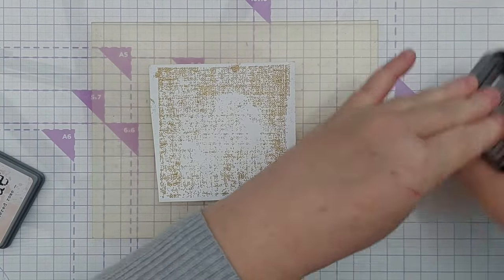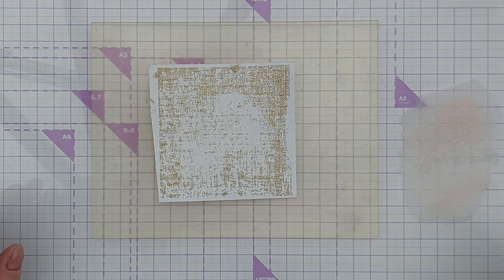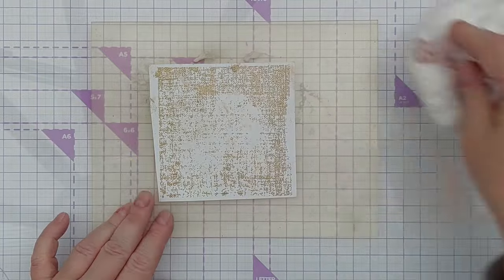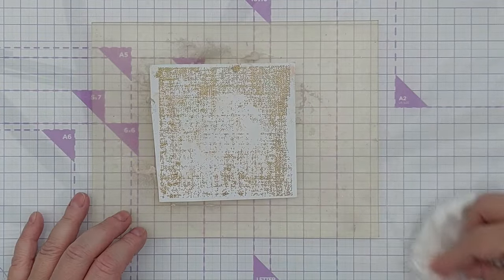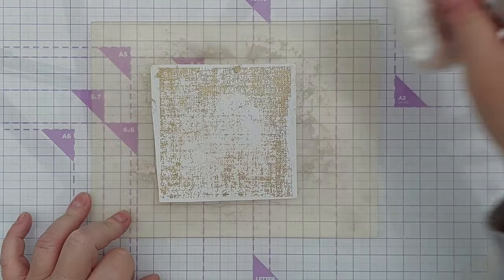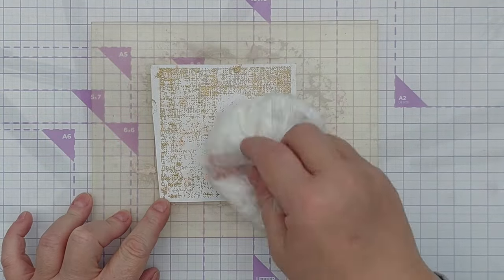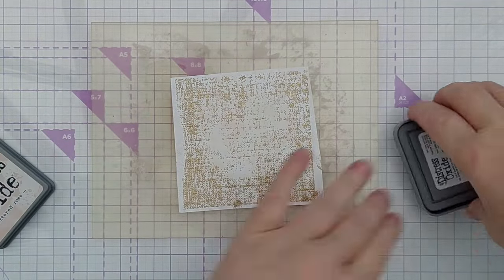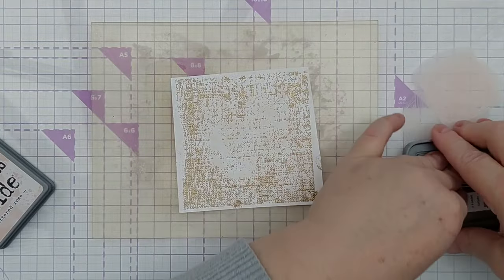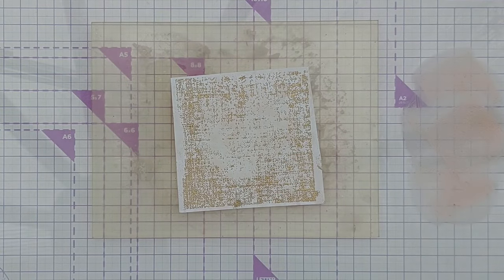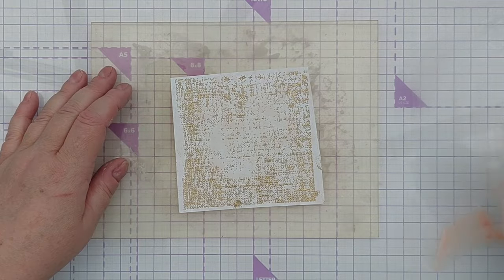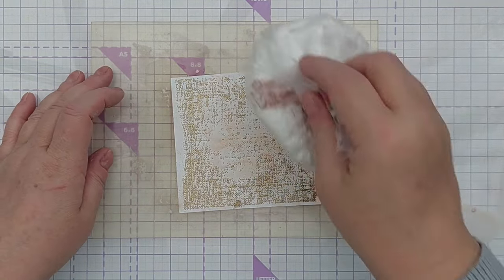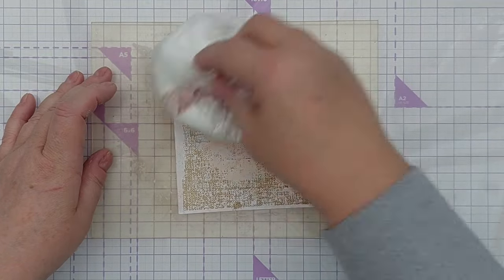I used tattered rose distress oxide, which I pressed down onto my glass mat and then squirted it with water to turn it into a paint, and then I picked it up with my smusher and smushed it all over my card. I then carefully dried it so as not to re-melt the embossing powder and did the whole thing again, gradually building up smushed layers of tattered rose. I chose tattered rose because I wanted to keep the card light and airy. I didn't want too strong a color, but you could certainly choose a color with more intensity if that's what you wanted.